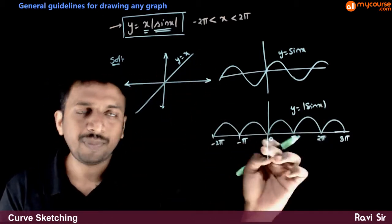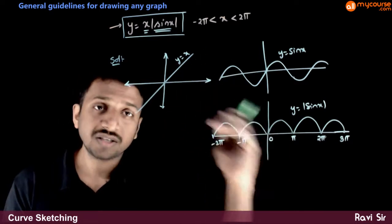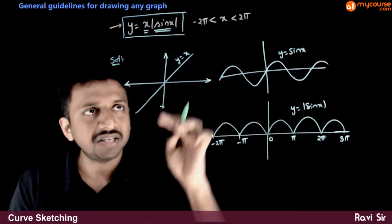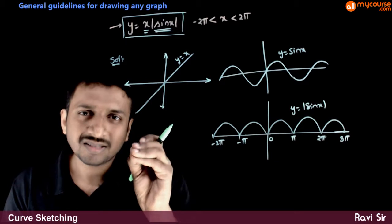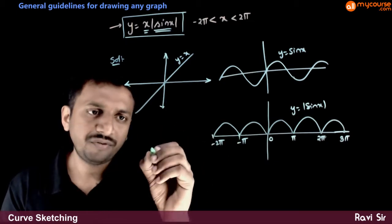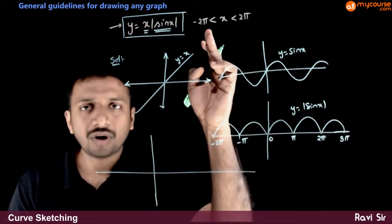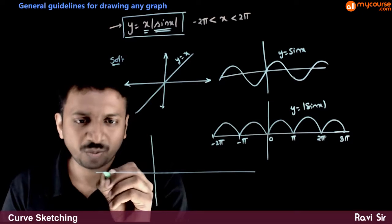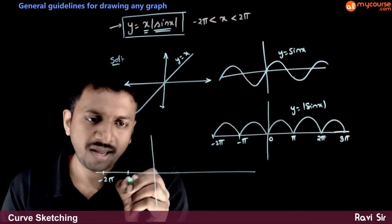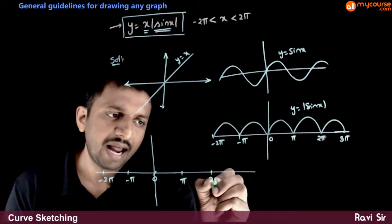Now you need to multiply these two graphs. There is no standard process to multiply two graphs. You just need to find some sample points and connect them using a smooth curve. If you take the multiplication of these two, you are asked to draw the curve between minus 2 pi and plus 2 pi.